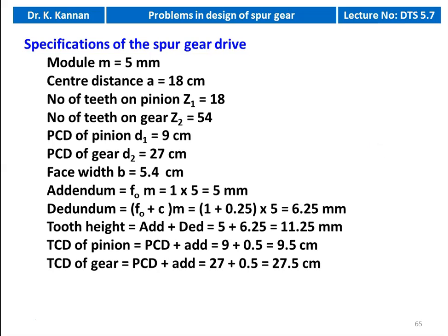We write down the data for the spur gear design: module 5 millimeter, center distance 18 centimeter, number of teeth on pinion 18, number of teeth on gear 54, PCD of pinion 9 centimeter, PCD of gear 27 centimeter, face width 5.4 centimeter, addendum = 1×5 = 5 millimeter, dedendum = (1+0.25)×5 = 6.25 millimeter, tooth height = addendum + dedendum = 11.25 millimeter, tip circle diameter of pinion = 9+0.5 = 9.5 centimeter, tip circle diameter of gear = 27+0.5 = 27.5 centimeter.